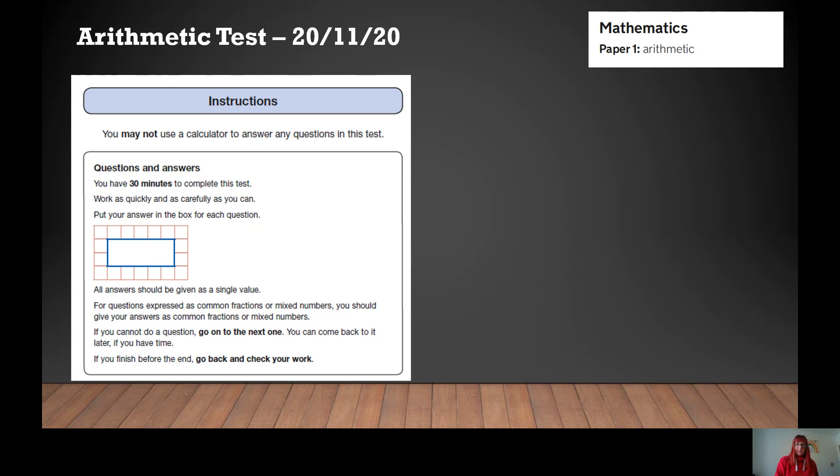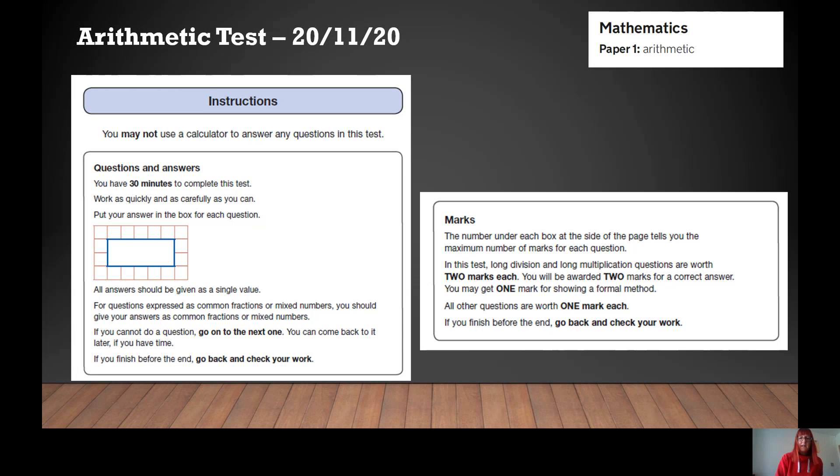Now, in terms of marks, the number under each box at the side of the page tells you the maximum number of marks for each question. And in this test, the long division and multiplication questions are worth two marks. So you will be awarded two marks for a correct answer. And one of those marks has got to be showing the method, the formal method that you've used. All the other questions are worth one mark. And again, always check your work.